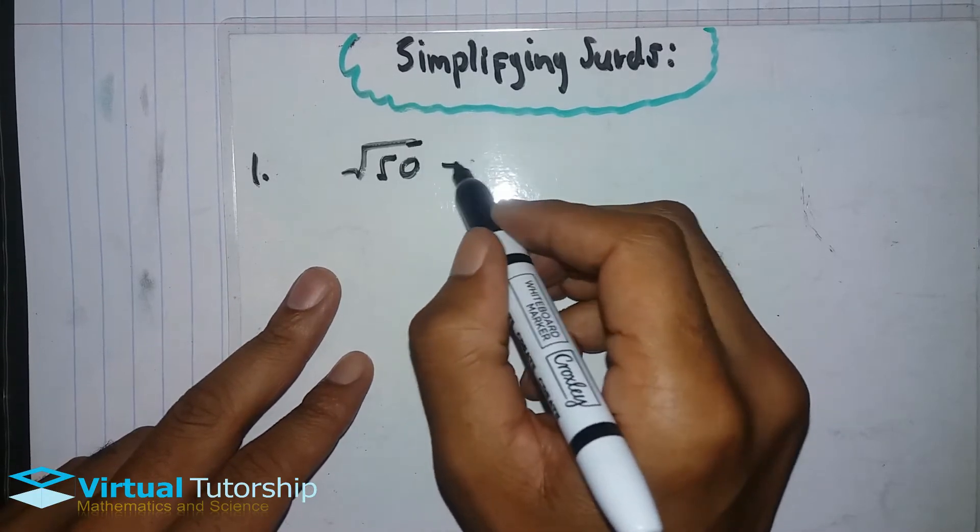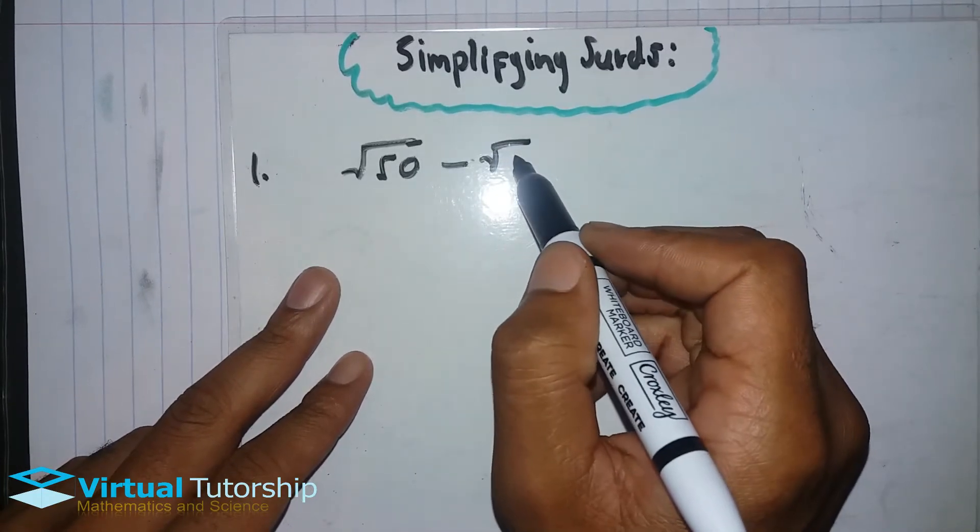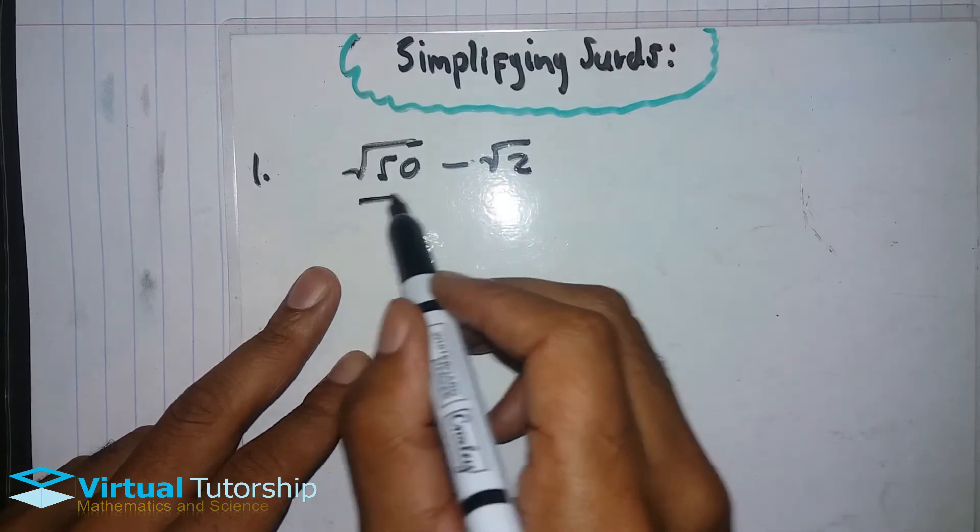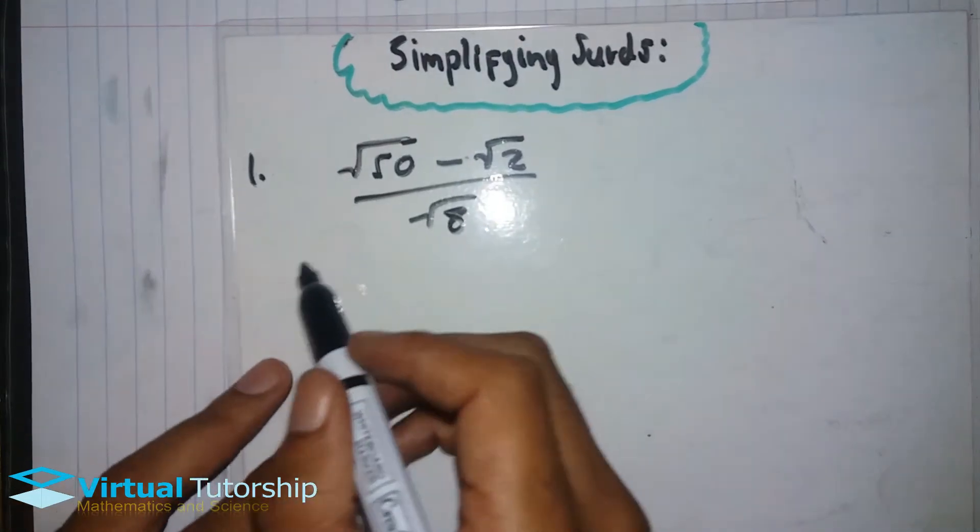So, square root of 50 minus square root of 2 over square root of 8.